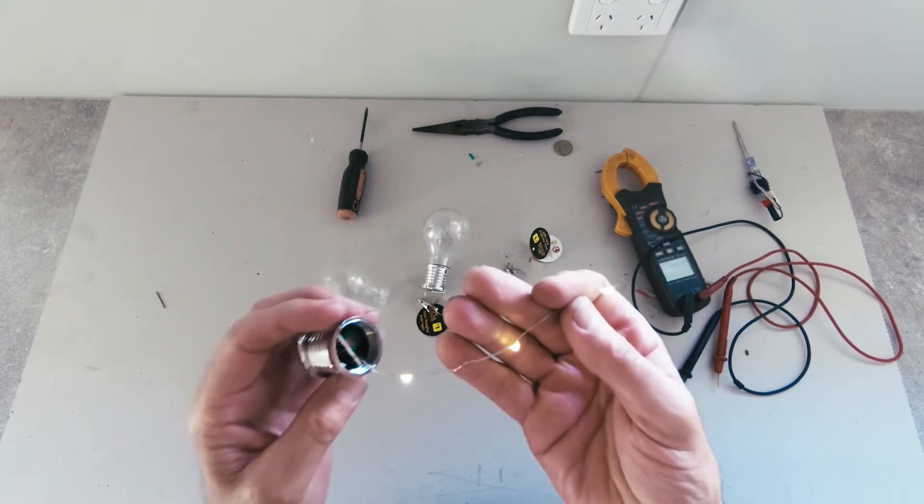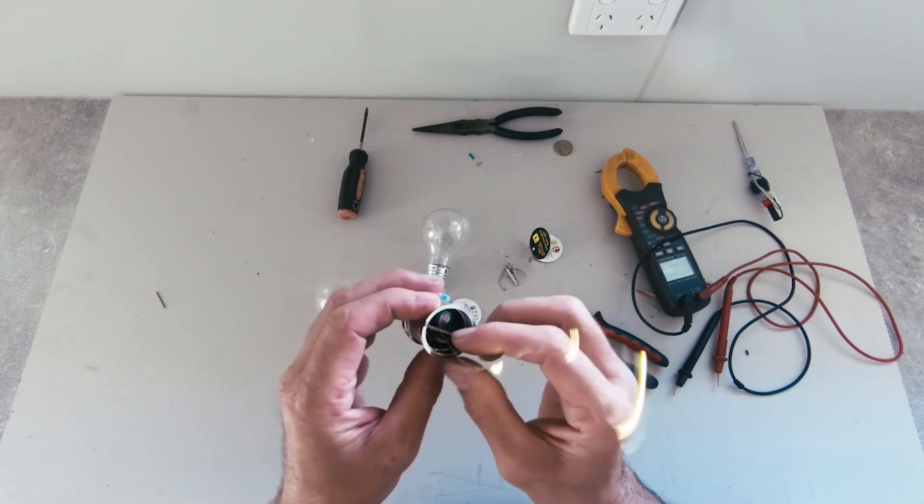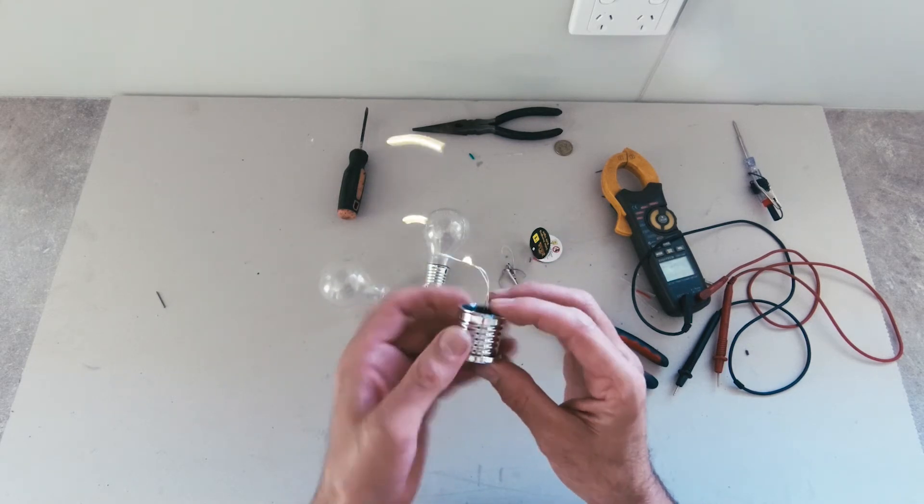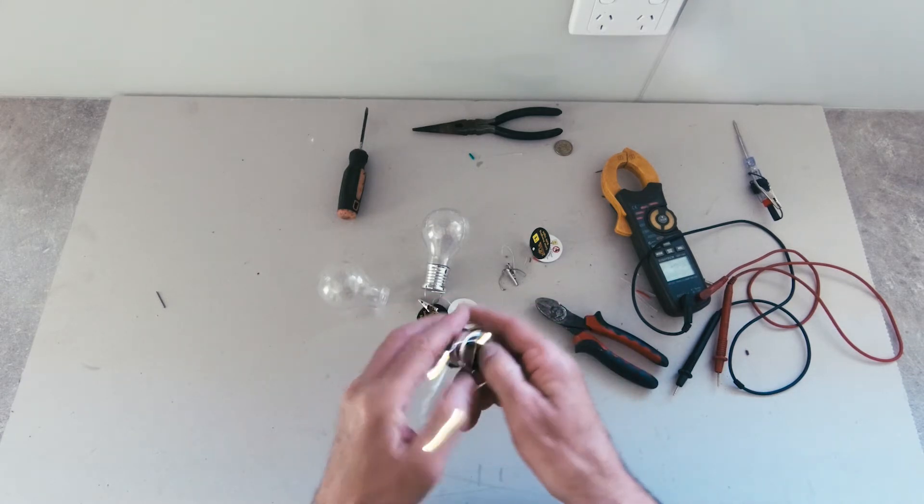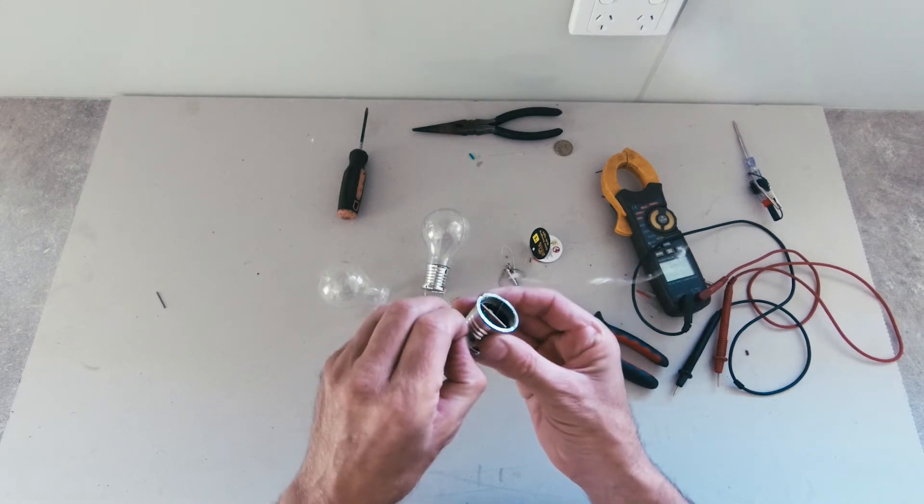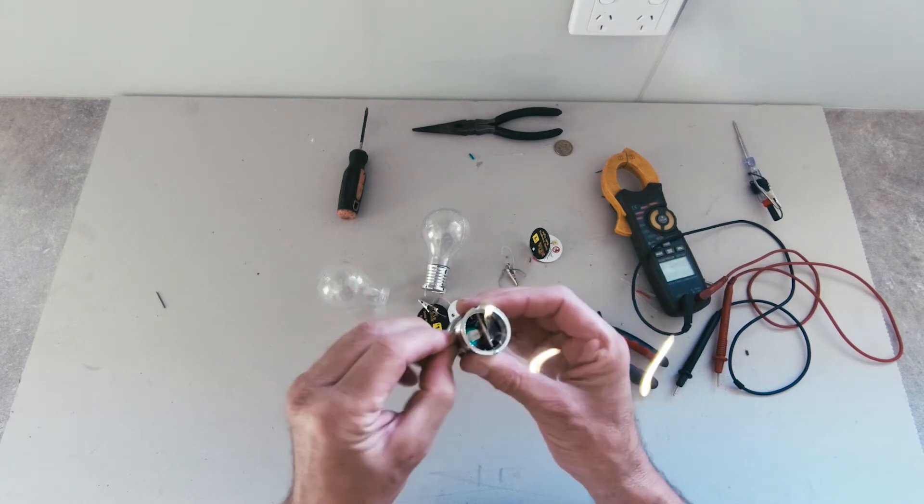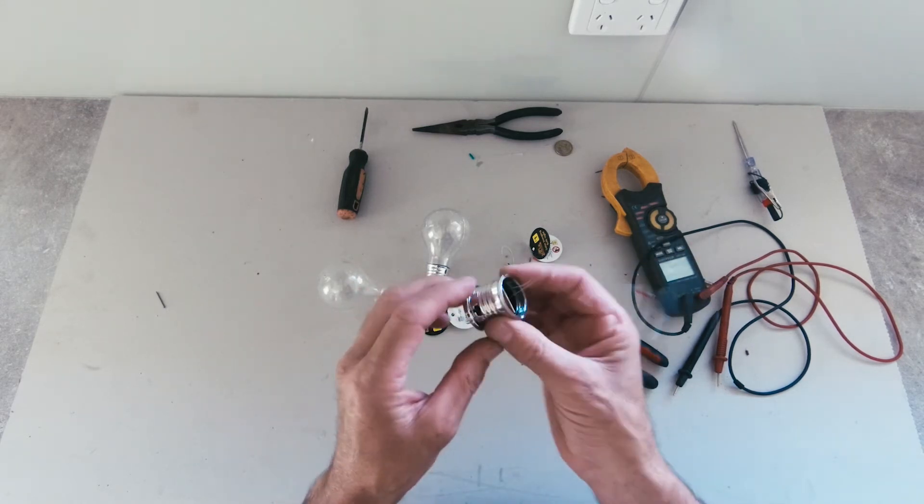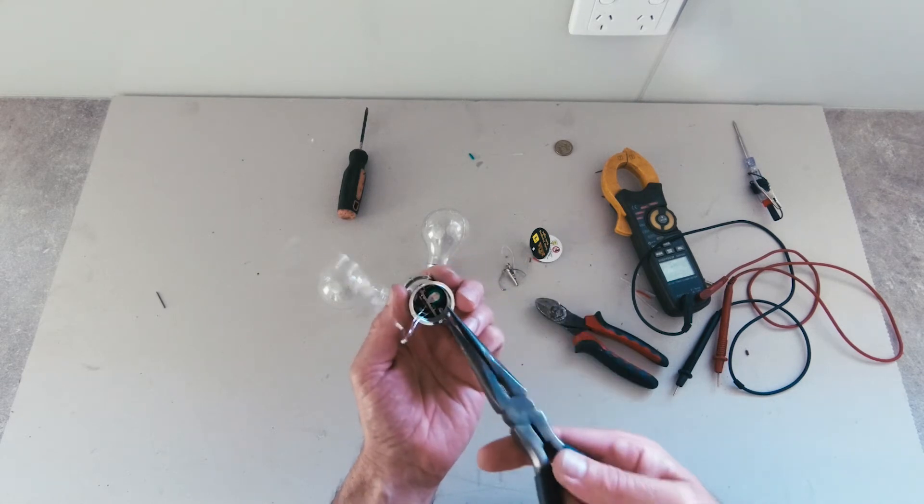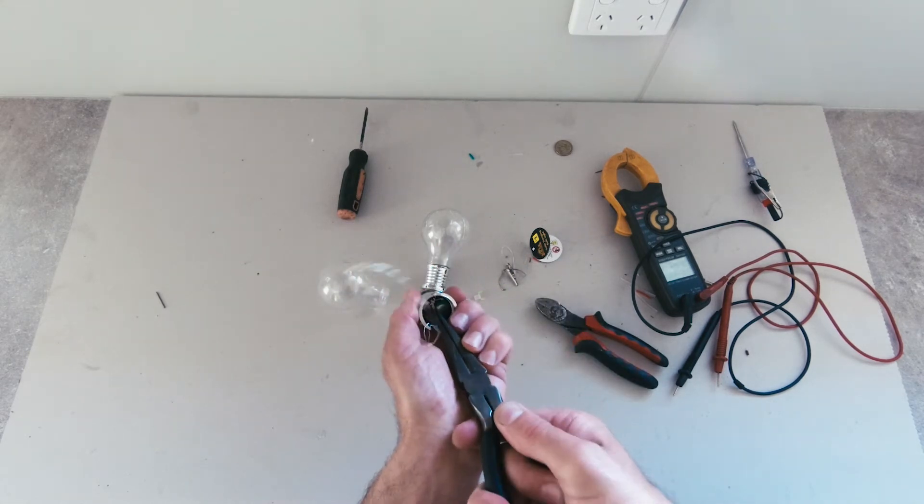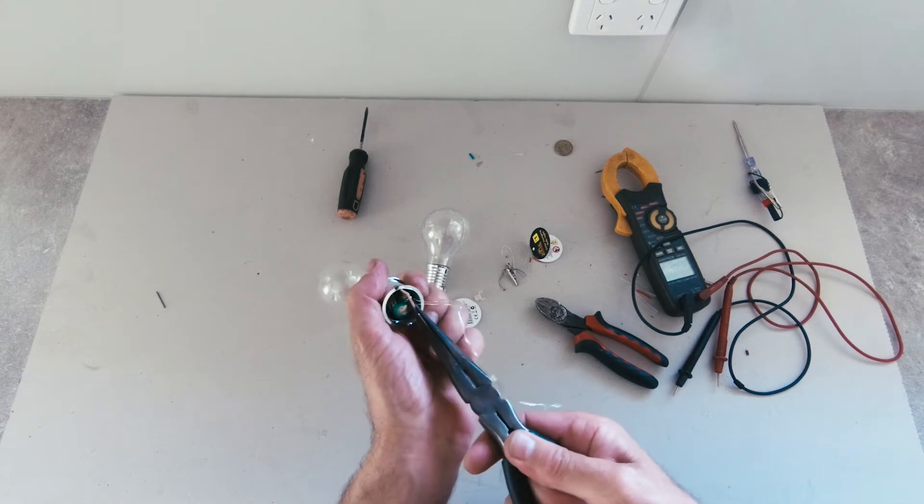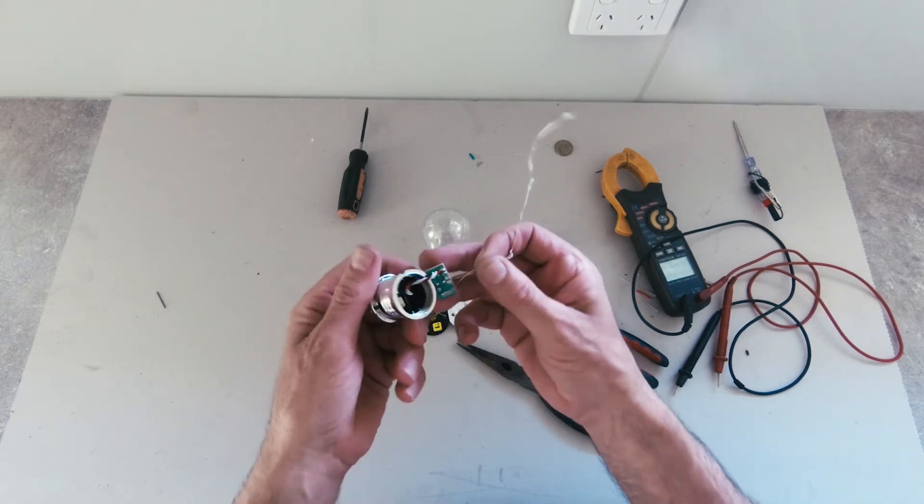Okay, just a string of LEDs. I can see a button battery in there, but how do I take this out now? Oh, here we go. I can see a button battery in there. That came apart fairly easy.